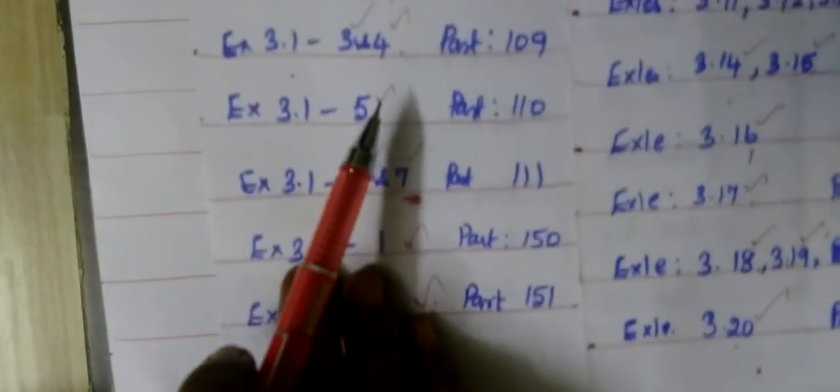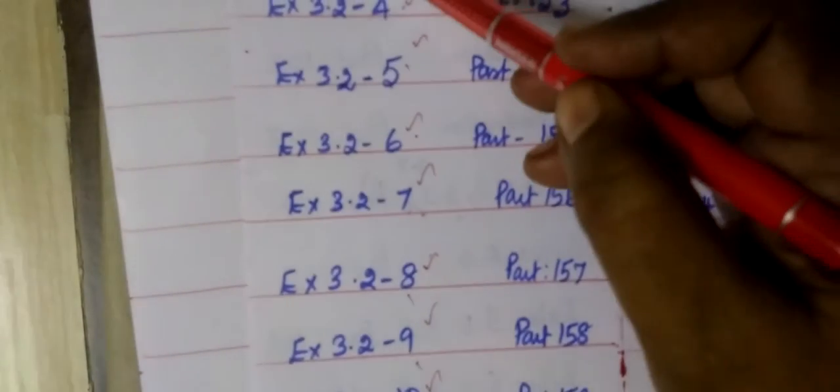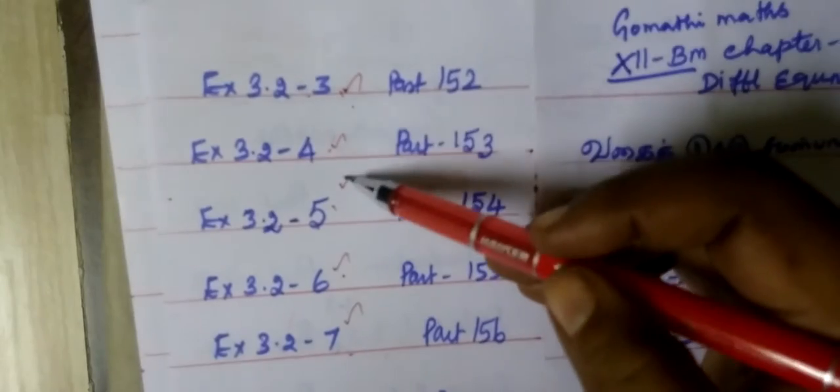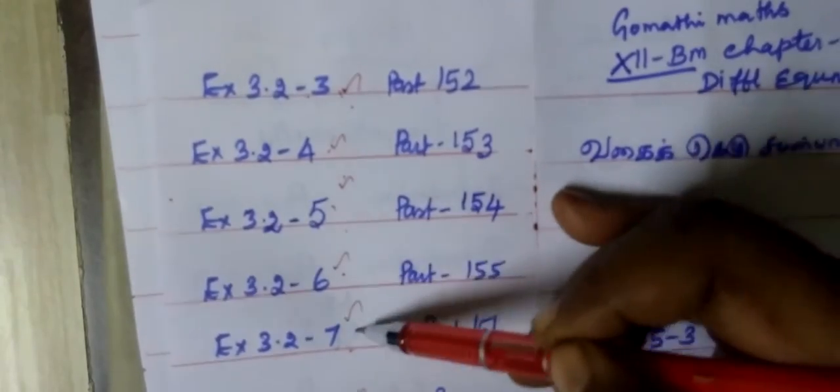Question number 1, 2. Then exercise 2.2 level. 3. Question number 3, 4, 5, 6, 7.